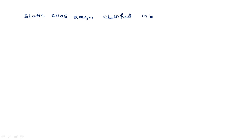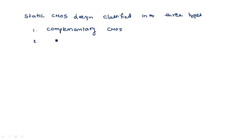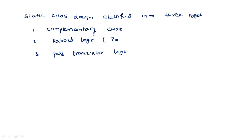Static CMOS is classified into three types: the first one is complementary CMOS design, the second is ratio logic, and the third one is pass transistor logic. Ratio logic is further classified into two types: pseudo NMOS logic and differential cascode voltage swing logic.